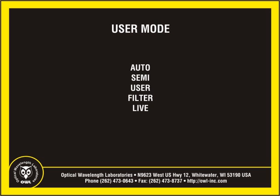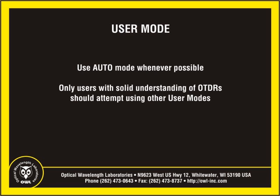There are five different user modes available in the OWLTREC OTDR: Auto, Semi, User, Filter, and Live mode. Each of these modes will be explained briefly in this video. It is highly recommended to use Auto mode whenever possible to test optical fibers. Only users with a solid understanding of what each of the various trace parameters does should attempt manual setting of trace parameters.